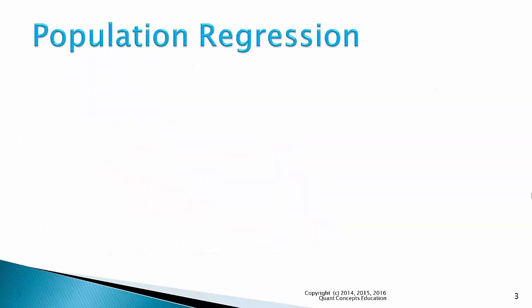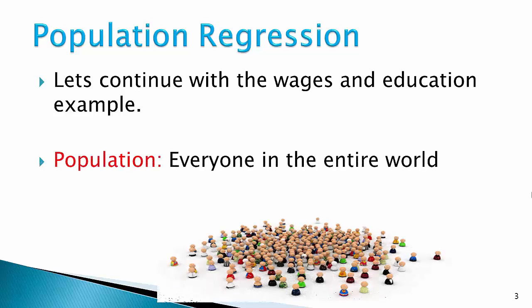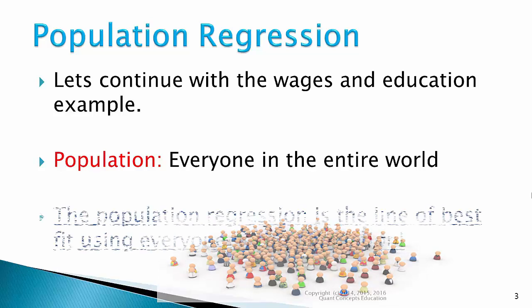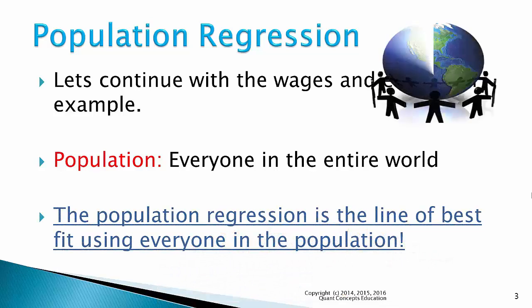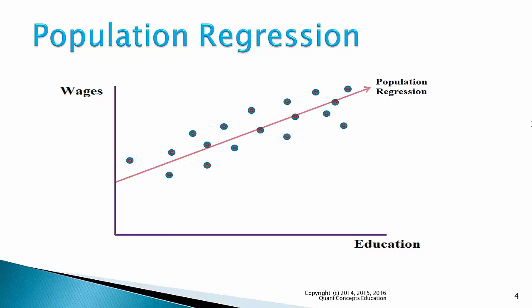For the sake of continuity, we'll follow on from the wages and education example from our YouTube clip. The first concept we're going to discuss is the population regression. Recall that the population includes every observation possible, so in this example, the population is everyone in the entire world. Suppose we plot everyone in the entire population's wages and education on the scattergraph — this means everyone in the entire world. The line of best fit for the population is our population regression line.